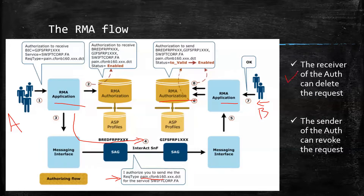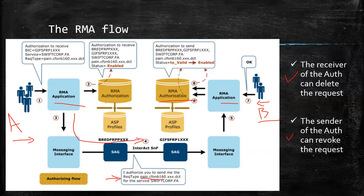There are two additional operations that can be performed. When an authorization request comes to B, B has every right to reject it, saying it doesn't want to send to A and will not accept A's filter. The second scenario is that after a few months, A can decide to change its mind and no longer wants to receive messages from B, so A sends a revocation of the original request. This revocation also needs to be authorized by B.